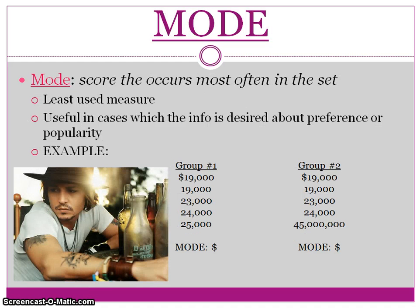Then we move on to mode. Mode is the score that occurs most often. It is the least used measure, but it is the most useful when we want to look at popularity or preference — for example, what kind of pizza people like. We'll practice this in class.